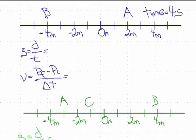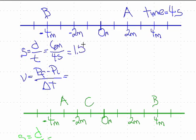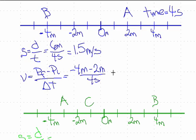Let's try another one. Again, we write down the equation first. For speed, which is distance divided by time: we started at A and went over to B. We don't worry about negatives and positives — it's just the distance, which is 6 meters. The time is 4 seconds. So 6 divided by 4 is 1.5 meters per second — that's the speed. For velocity, we take our final position of minus 4 meters minus our initial position of 2 meters, divided by 4 seconds. That gives us minus 6 meters divided by 4 seconds.